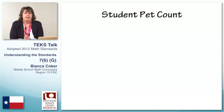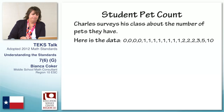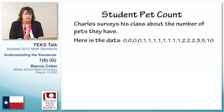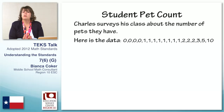For example, we might have Charles, who surveys his class about the number of pets they have. Here's the data. The zeros represent students who do not have any pets. One student has one pet, two pets, three, five pets, and one student has ten. I'm hoping they're fish.